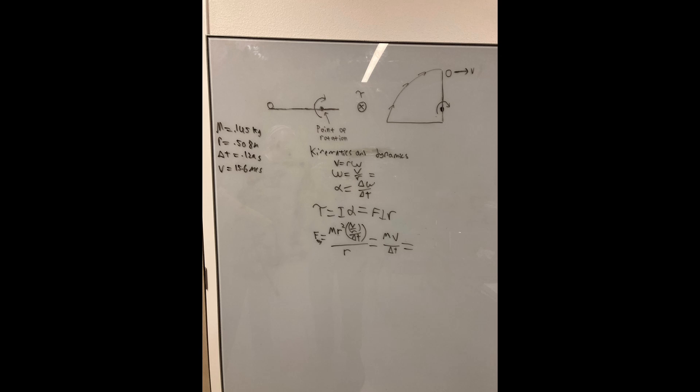Using Tracker, we calculated its linear velocity at the top of the arc to be 15.6 meters per second. We also know that the mass of the ball is 0.145 kilograms. The radius from the ball to the point of rotation is 0.508 meters, and Ted applied a force to the ball by rotating it over 0.129 seconds before it was released.